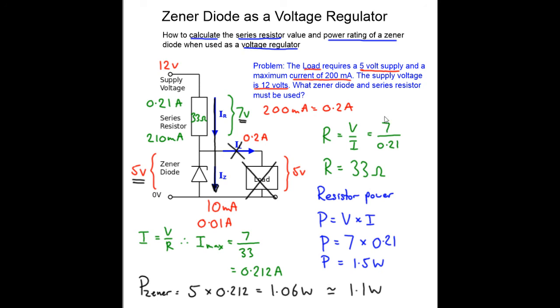So have we solved our problem? Well I think yes we have because we know the resistor value is 33 ohms, we know it has to be at least a 1.5 watt resistor, and we know our Zener diode has to be a 5 volt Zener diode and we know that it must be able to handle at least 1.1 watts of power. So that is our Zener diode and our resistor calculated for our circuit.